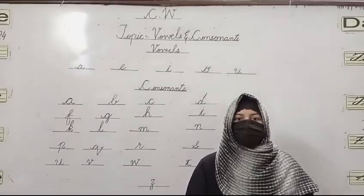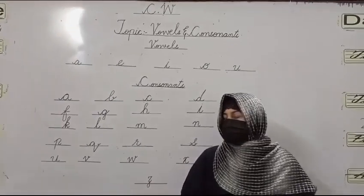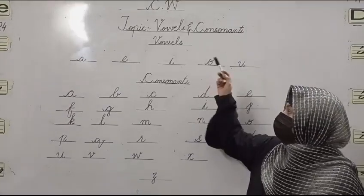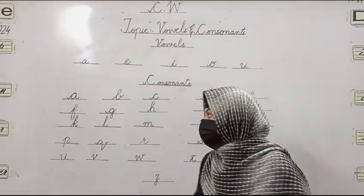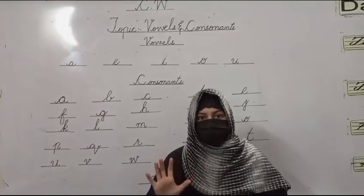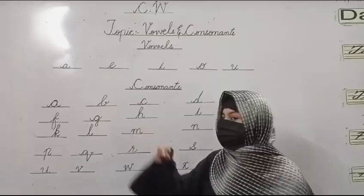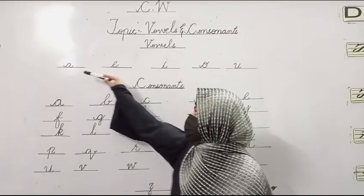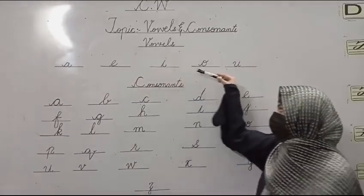Welcome! How are you all? Hope you all are fine and safe. So today our topic is vowels and consonants. Let's get started. There are five special letters in the English alphabet: A, E, I, O, U.